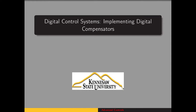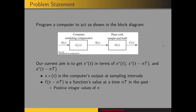Now we get to look at a technique for implementing or visualizing the implementation of digital compensators. We're going to start by looking at the block diagram for the system. If we have a feedback form for our system, then the compensator is going to receive the error signal. The output of that we'll call x, and then the compensator is cascaded with the plant. So the output of the plant is the output of the system, C of z.